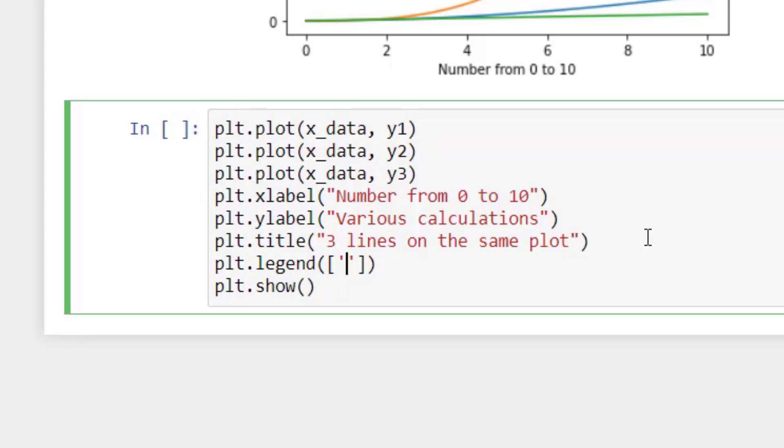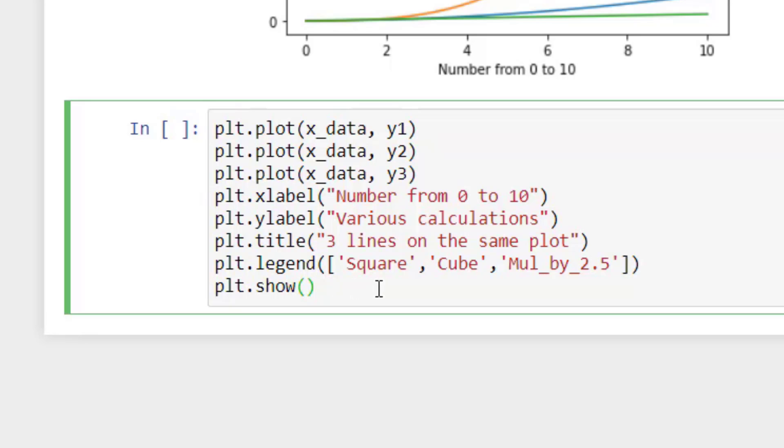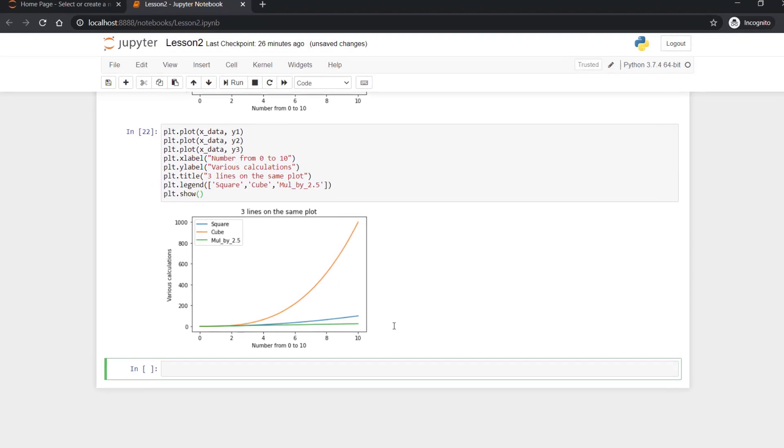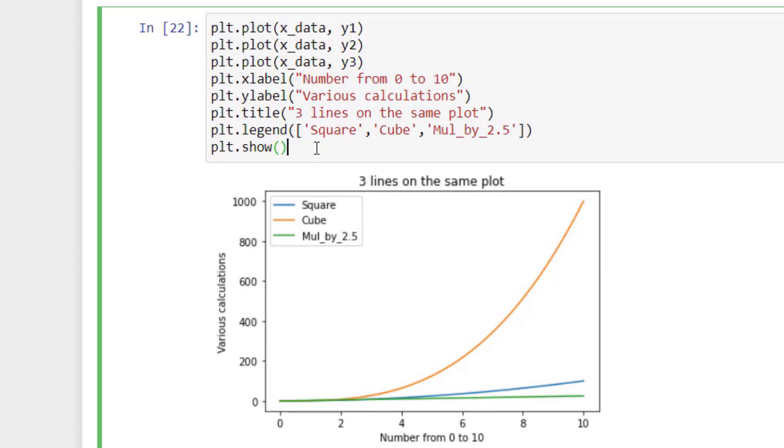So we will create a list and say, let's say, the first data was about a square, and the second one was a cube, third one was multiplied by 2.5. That's it. You just have to define this one and you are good to go, your legends is ready. I mean plots legends is ready. And then you can execute this one. Great.